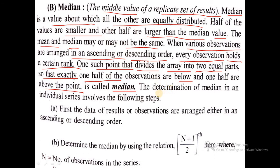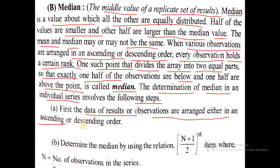The determination of median in an individual series involves the following steps. First, the data are arranged either in ascending or descending order. Then determine the median by using the relation (n+1)/2 th item, where n equals the number of observations in the series.